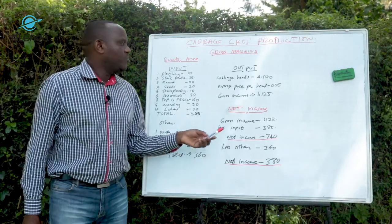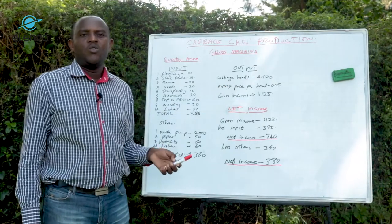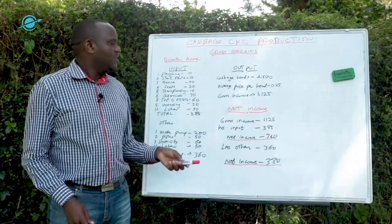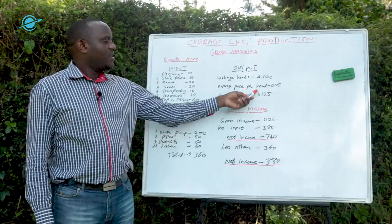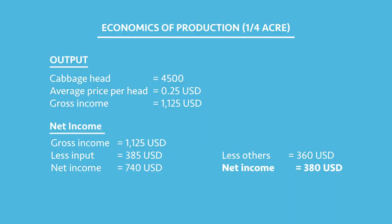Now we come to the output. The number of cabbage heads per quarter of an acre will be 4,500 heads. The average price per head is $0.25. The gross income — 4,500 multiplied by $0.25 — is $1,125 USD.